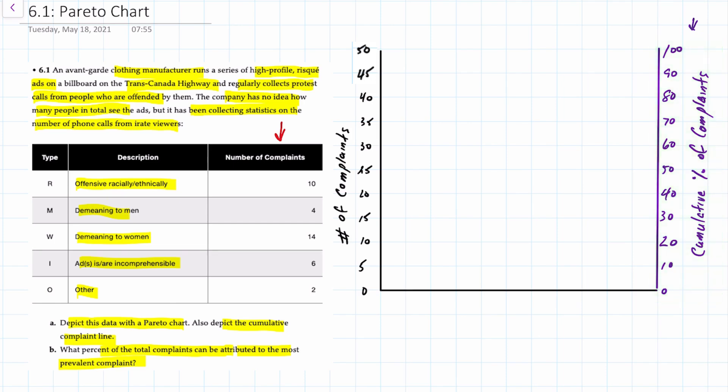So what we want to do is get these complaints into a chart and how we do that is we rank them from the highest to the lowest number of complaints. So we can see that demeaning to women or W would be ranked number one, offensive being ranked number two, incomprehensible ranked number three, demeaning to men or M number four, and other would be number five.